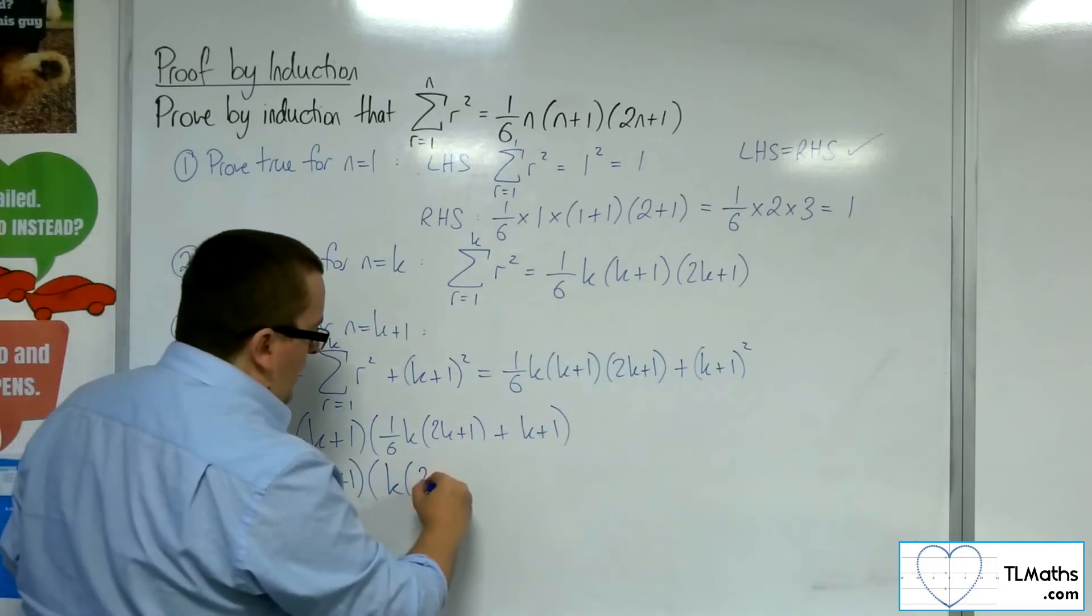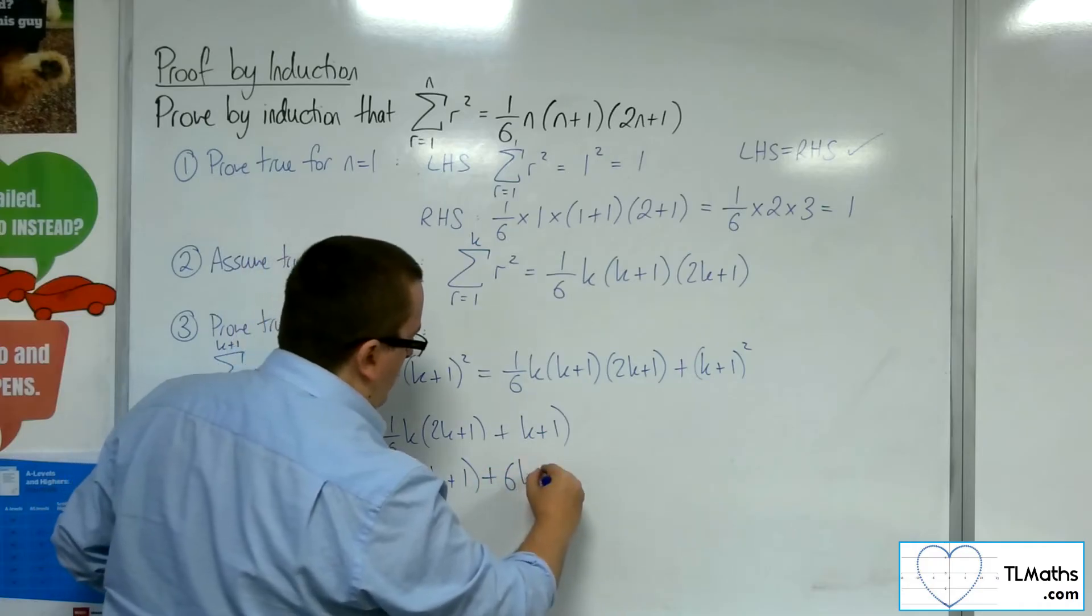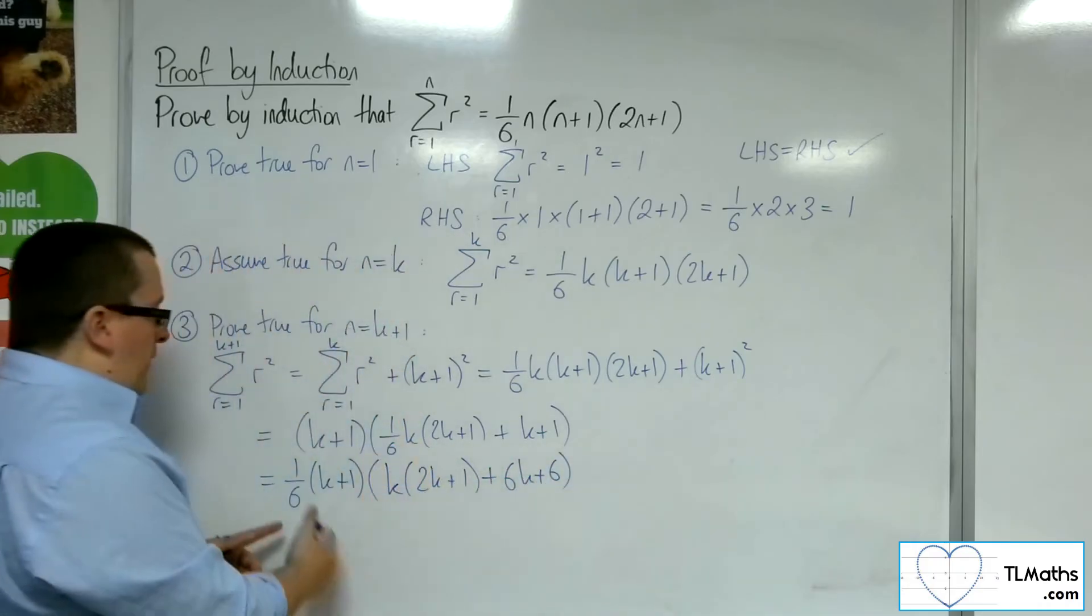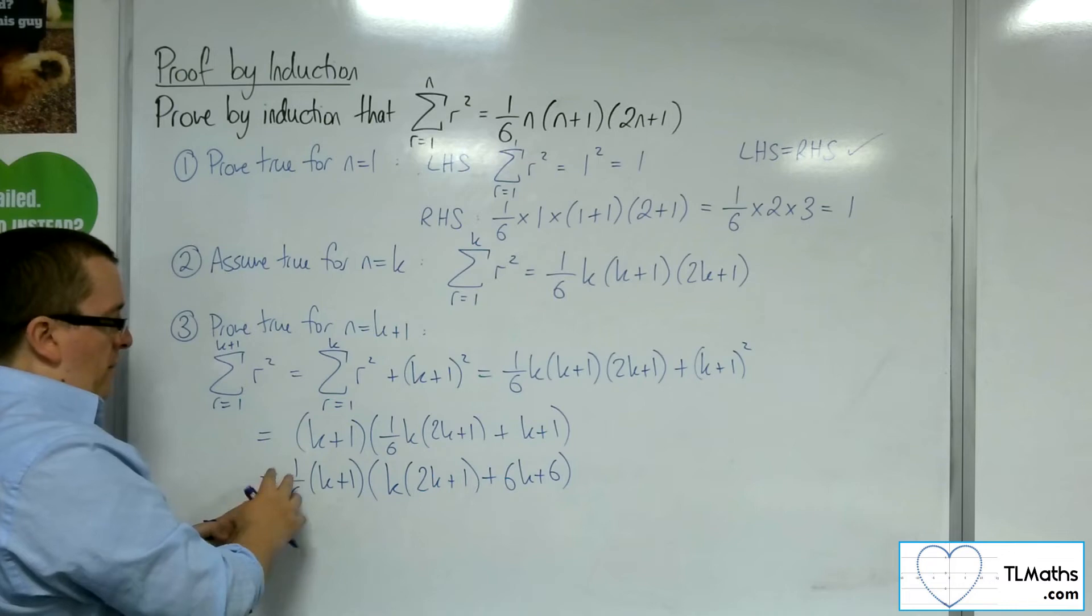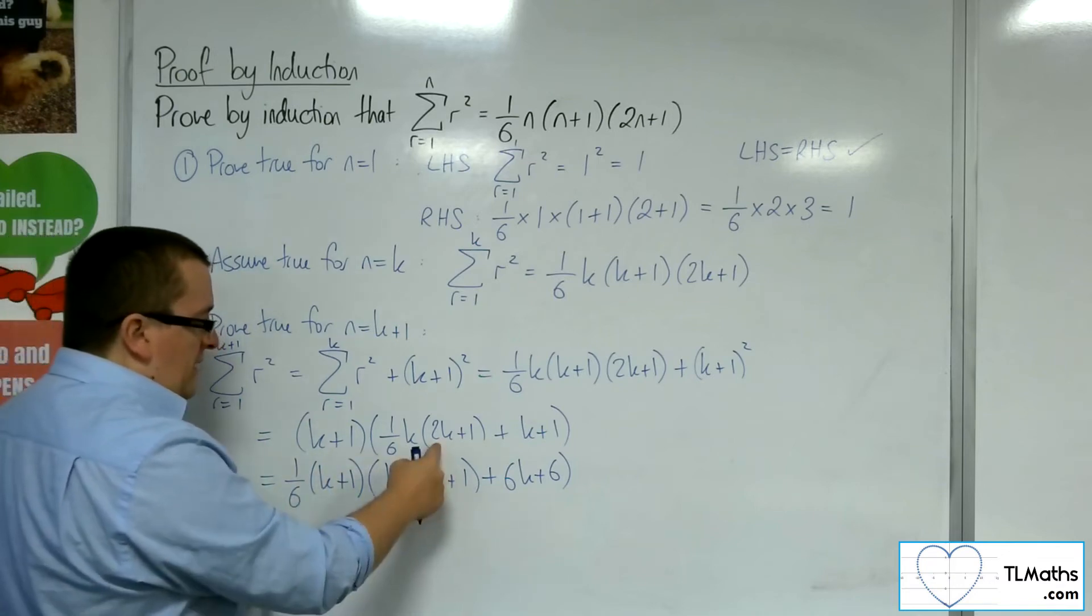I'm going to get the k, 2k plus 1, plus 6k plus 6. Because now, if I factor that out again, I've multiplied it out, I've got the 1/6 times that, gives me this term.